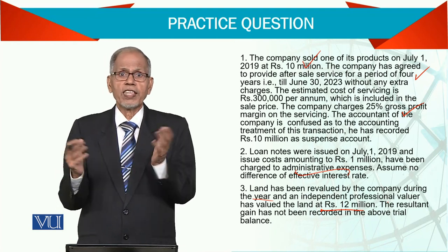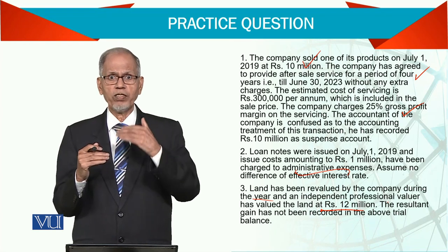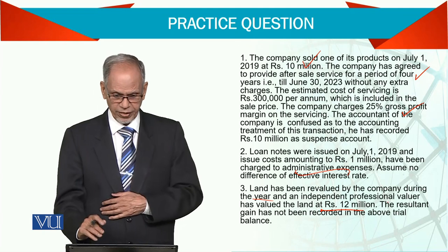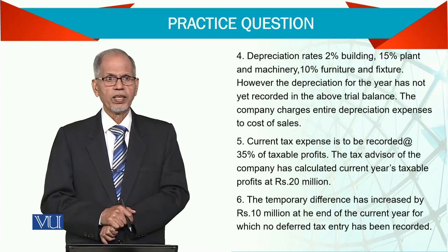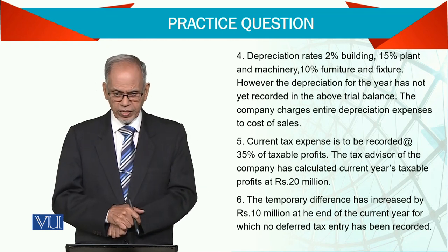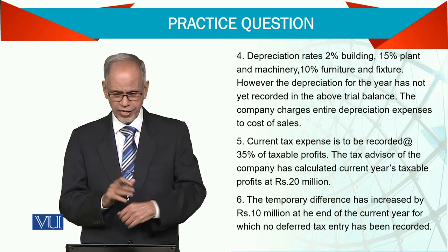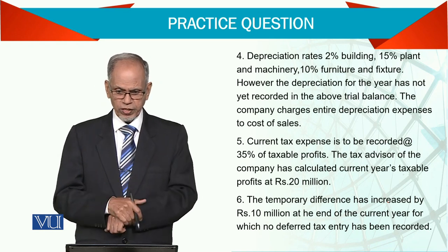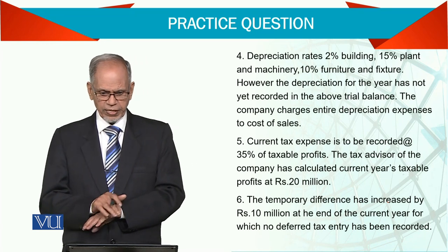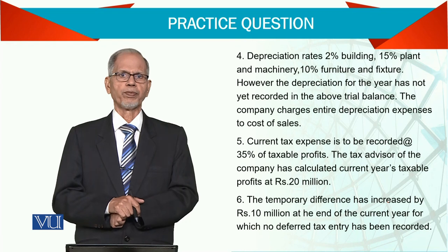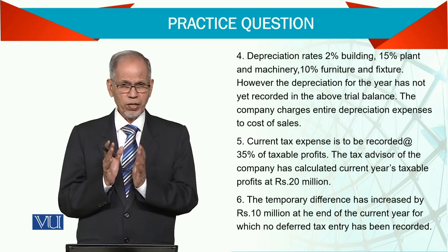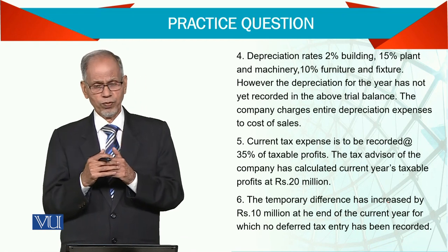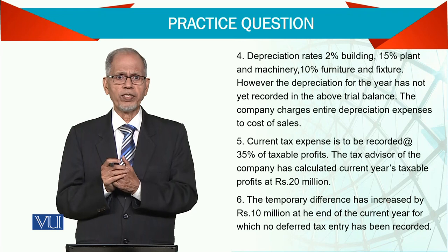Now, depreciation — be very careful here. Depreciation is 2% on the building, which implies a useful life of 50 years; 15% on plant and machinery; and 10% on furniture and fixtures. However, the depreciation for the year has not yet been recorded. In the trial balance, the company charges the entire depreciation expense to cost of sales. These three asset categories are to be depreciated using the straight-line method — if no method is specified, straight-line is assumed.